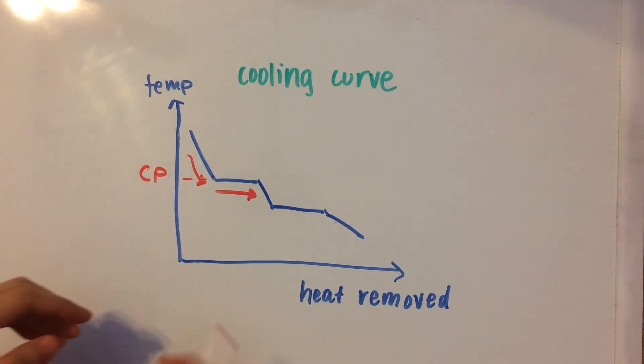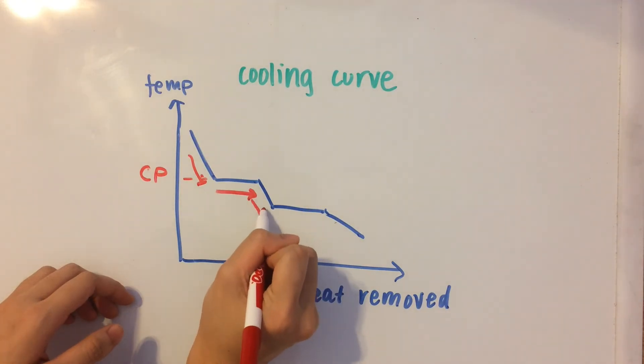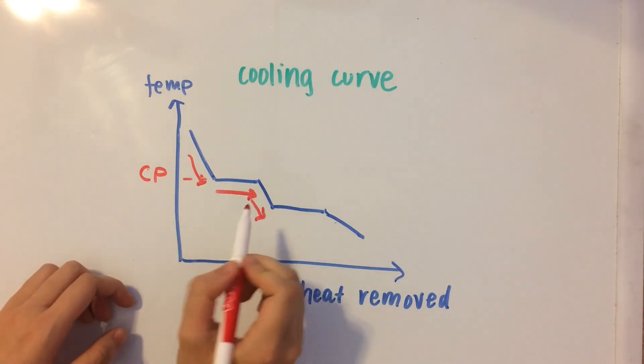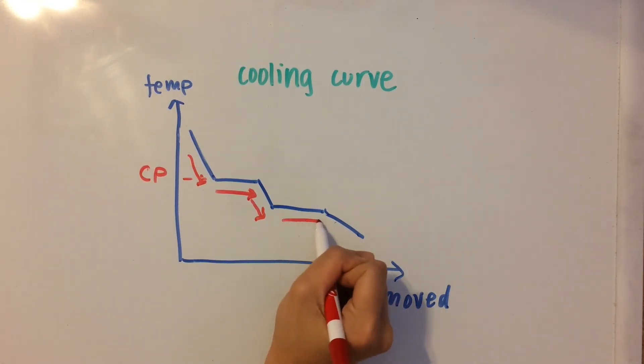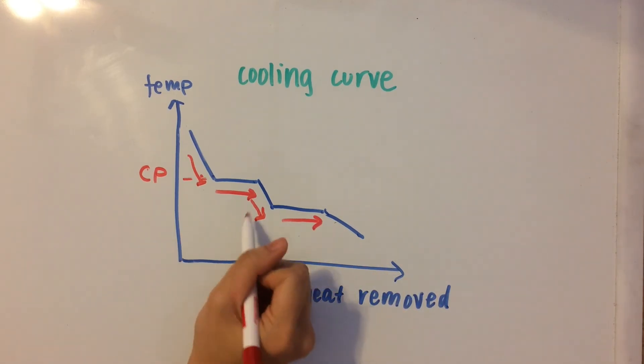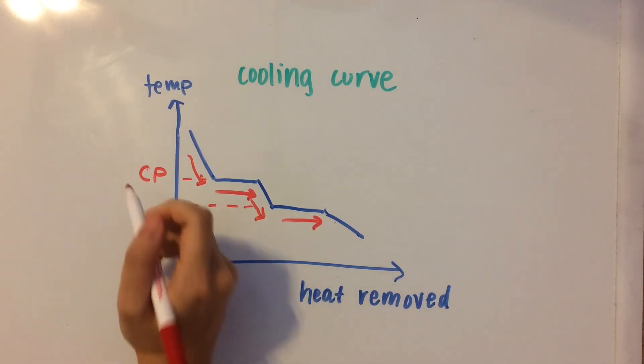And then we have the liquid. Since the gas is already condensed, that's going to be cooling. Once you remove more heat, the temperature is going to decrease. And then we get to another horizontal point. That is considered the crystallization point.